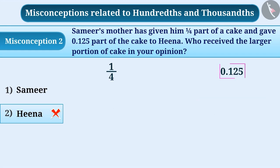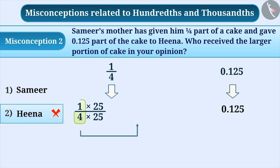Since 0.125 is already in decimal form, we will not make any changes to it. To represent one-fourth in decimal form, we will multiply the numerator and denominator by 25. By doing so, we get the equivalent fraction of one-fourth as 25 by 100. Its decimal form will be 0.25.